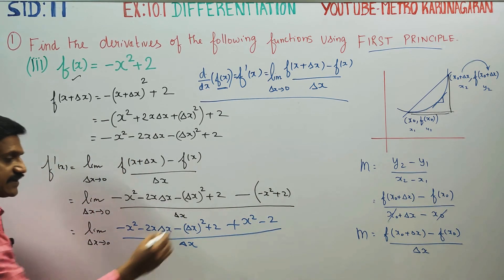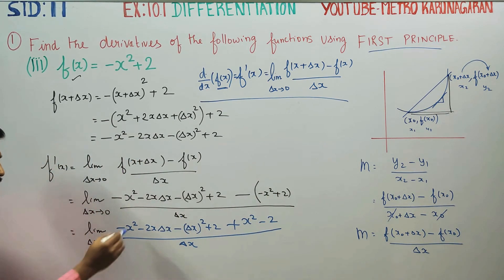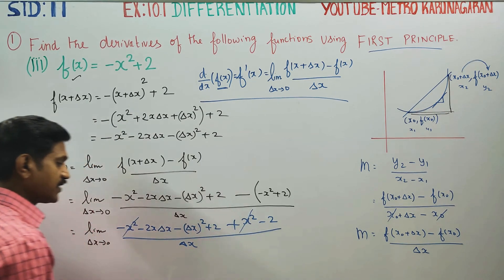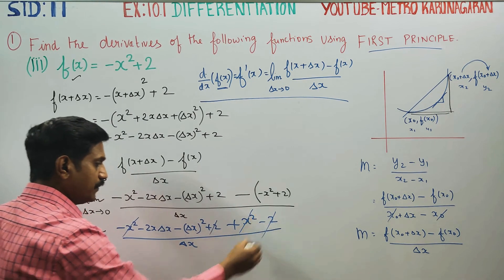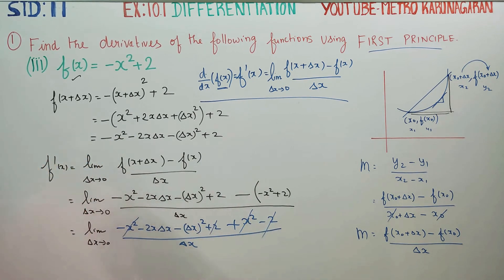Now canceling: -x² and +x² cancel, and +2 and -2 cancel. The remaining terms are: limit as delta x tends to 0 of [-2x·delta x - delta x²] / delta x.